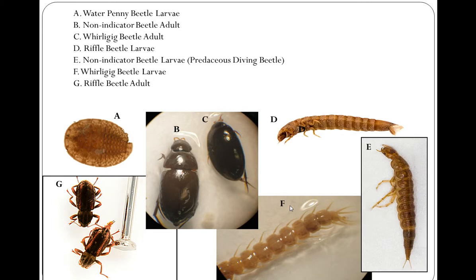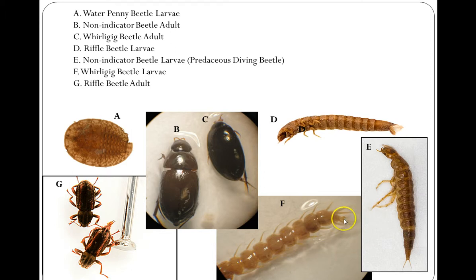F is the Whirligig beetle larva. These have lateral filaments coming off the sides, large gaps in definition between segments on the abdomen, and you can just barely see the proleg with four claws on it. G is the Riffle beetle adult: a small black beetle with long legs and split claws. I hope this video was a help to you identifying your Riverwatch beetles, and thanks for watching.